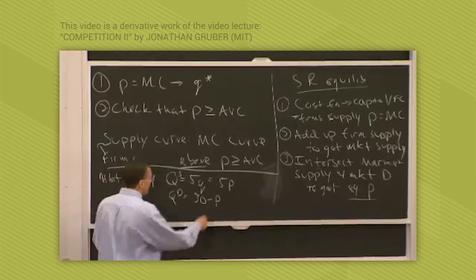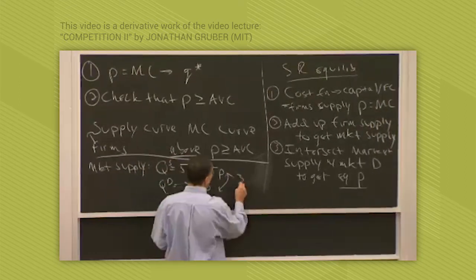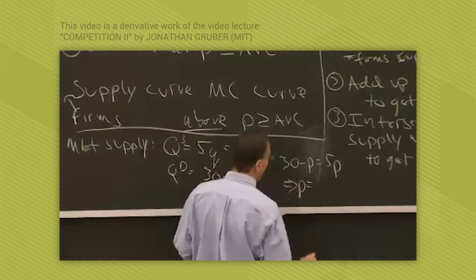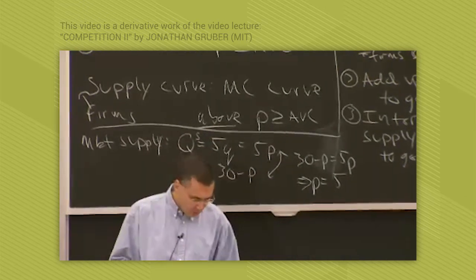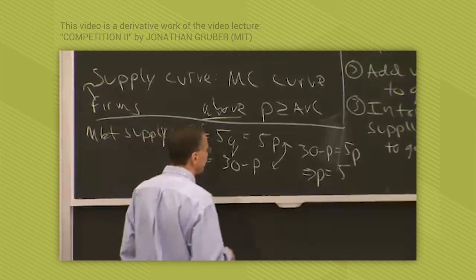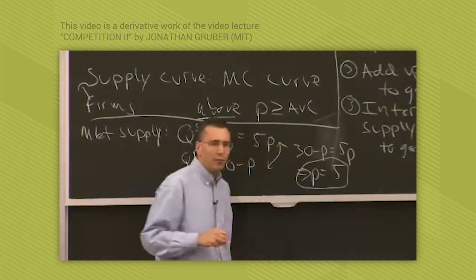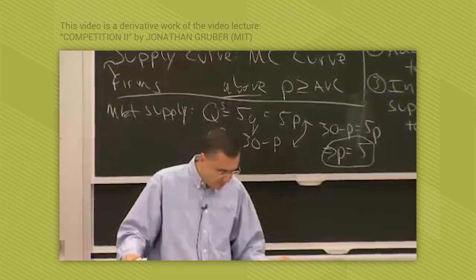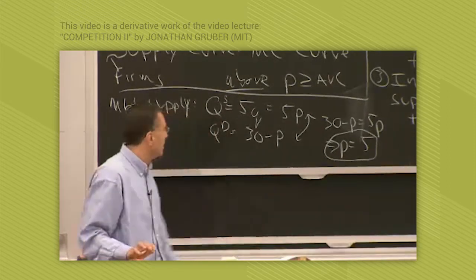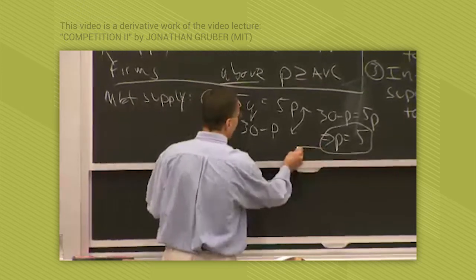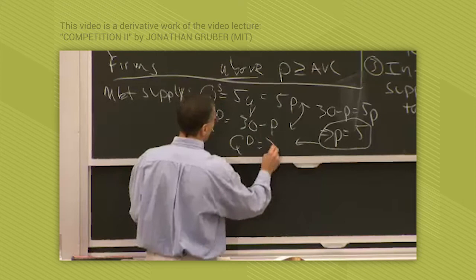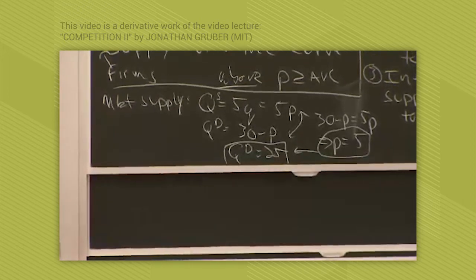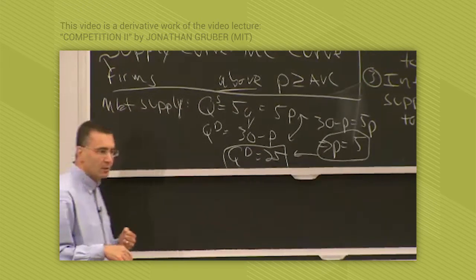To get equilibrium, we set these equal and we get that 30 minus P equals 5P or P equals 5. That's the equilibrium price. Given the market supply curve, given the demand curve, I've derived the equilibrium price of 5. Now at a price of 5, what's the quantity demanded? At a price of 5, quantity demanded equals 25. So at a price of 5, the market wants 25 of these things, whatever the heck it's producing. That's the quantity demanded.